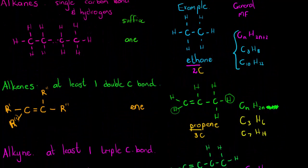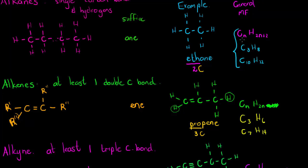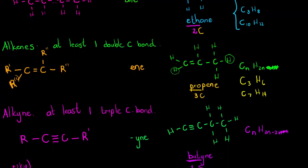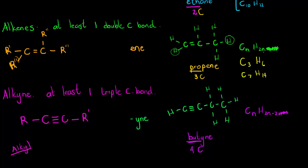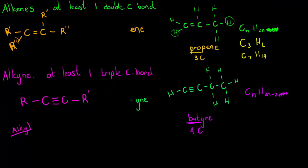Comparing the three: alkanes had CₙH₂ₙ₊₂ (two hydrogens per carbon plus two), alkenes had CₙH₂ₙ (two hydrogens per carbon only), and alkynes have CₙH₂ₙ₋₂. Each time we go from single to double to triple bonds, we lose two hydrogens because the bond that used to hold those hydrogens is now used as an extra carbon-carbon bond.